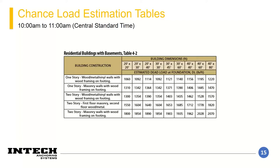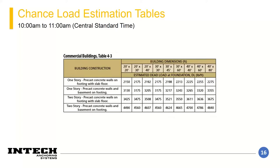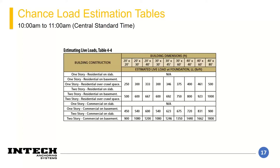Similar to the last table, this one covers residential buildings with basements. You use it the same way — line up the construction type on the left with the dimensions to come up with your load estimation. There's also a table for commercial buildings, though it's only accurate for precast walls on slab floors on traditional footings, not for isolated columns or anything unique.